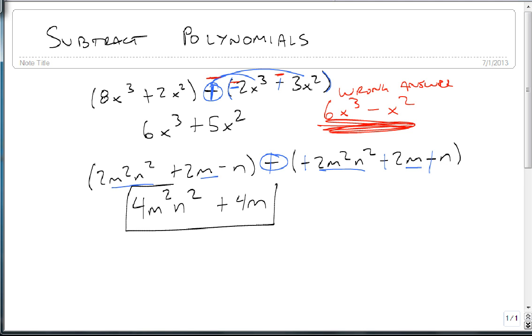Remember, if you accidentally ended up with 4m²n² - 2n, then you forgot to take your minus sign through and only applied it to the first one.